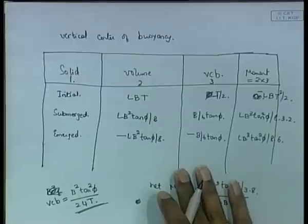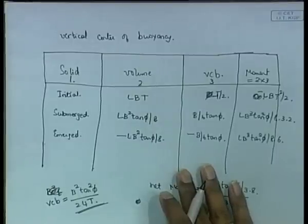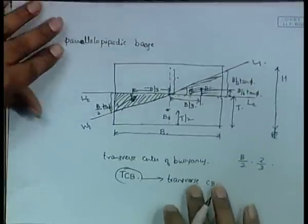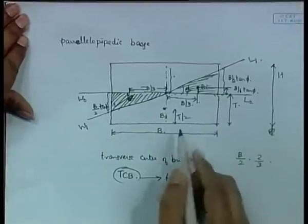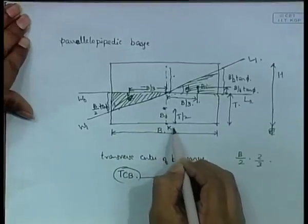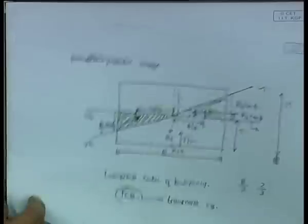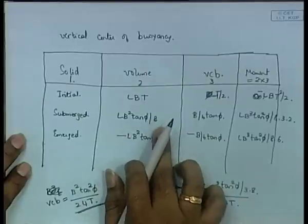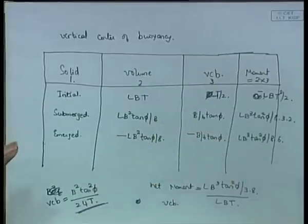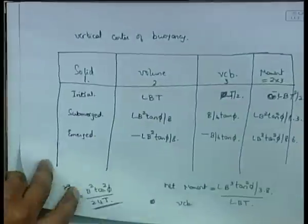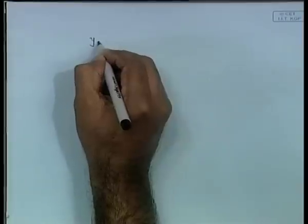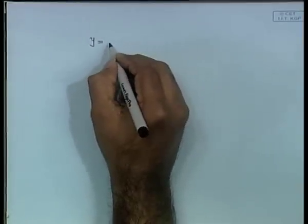There is an advantage to taking the heeled waterline as origin in some cases, but most problems take the keel as zero. Whatever origin you choose, write it clearly in your answer script. Once you have both y and z as functions of phi, you can remove phi from both equations to get one equation relating z and y, which is known as the equation of the B curve.